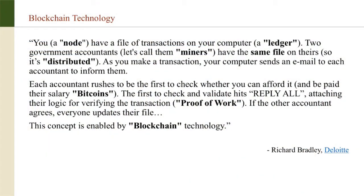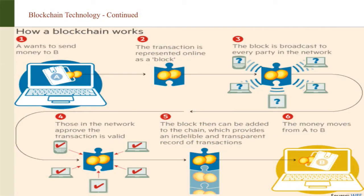Blockchain utilizes a distributed ledger — a ledger simultaneously shared between various nodes, which are computers on the system. When a transaction happens, it simultaneously happens on every node's ledger. Once a transaction occurs and a block is formed, it is verified by all nodes, encrypted using a cryptographic hash, and the block is sealed. This hash functions like a key — it cannot decrypt the block but can be used to verify it.